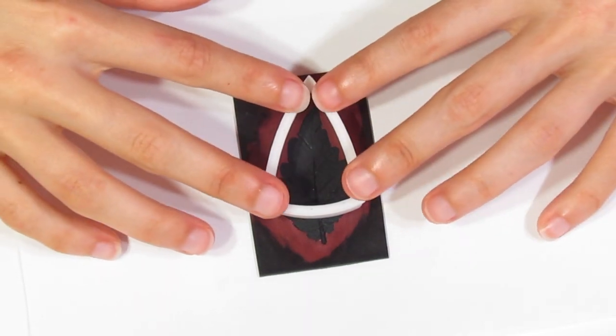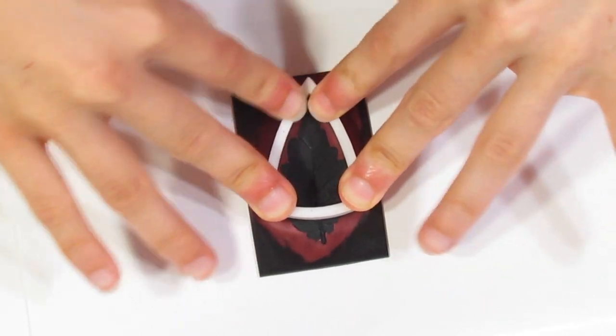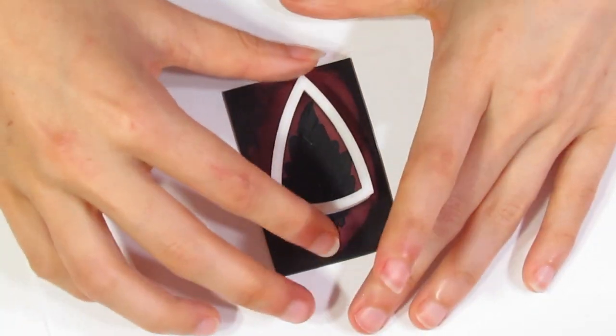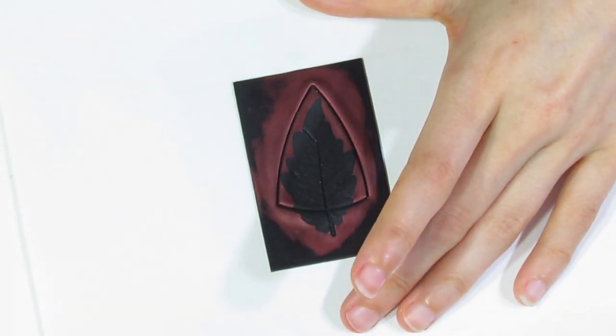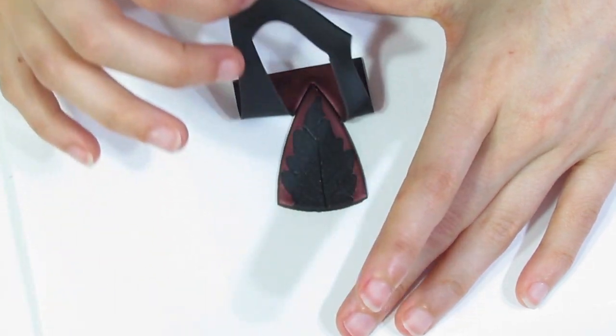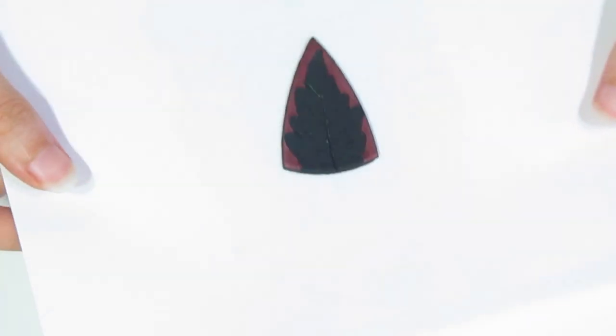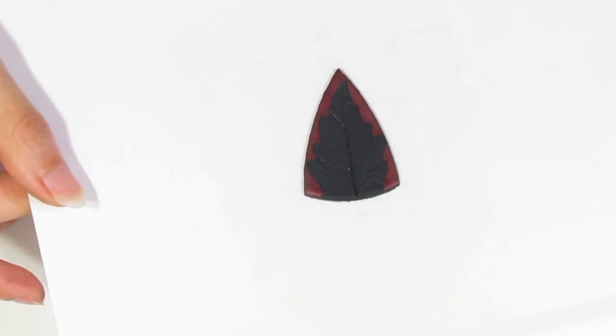I've just positioned it in the right spot. Then I want to cut straight down, lift up, and peel away that excess clay. Pop that into the oven for half an hour at Premo's recommended temperature to set it.